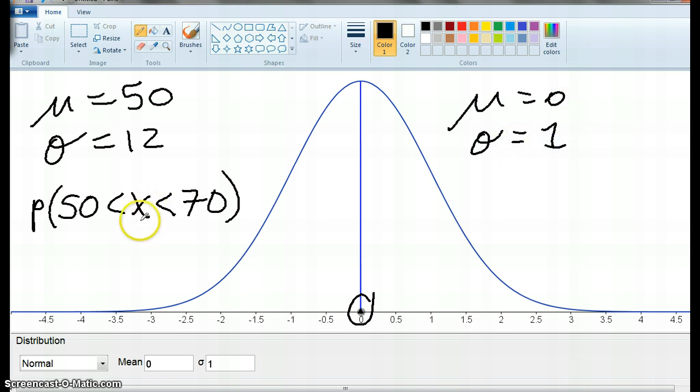So we've got an X here and we actually need a Z. So we're going to go the probability, now because this is 50 and the mean is 50, because Z equals X minus the mean divided by the standard deviation.